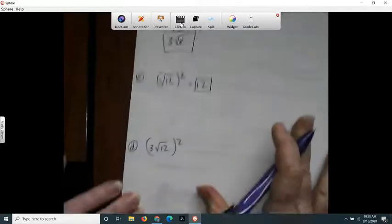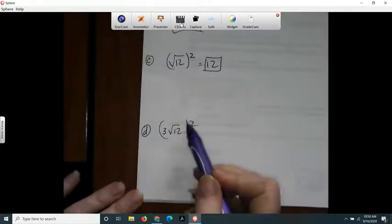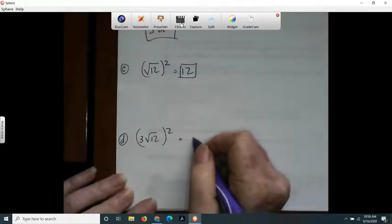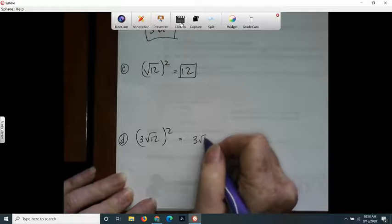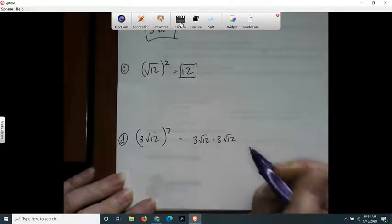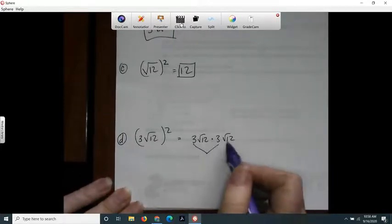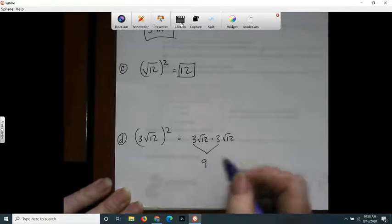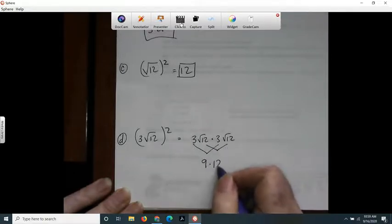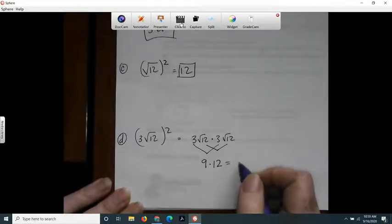This one means I'm squaring this whole thing. So what I'm really saying is, I've got 3 root 12 times 3 root 12. Well, I can do it like this. I can say 3 times 3 is 9. And root 12 times root 12 is just 12. And then 9 times 12 is 108. That's one way to do it.